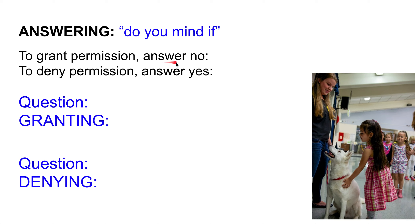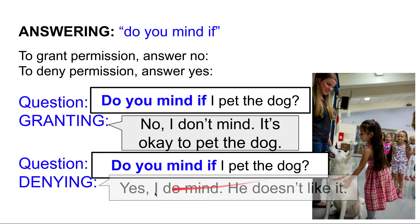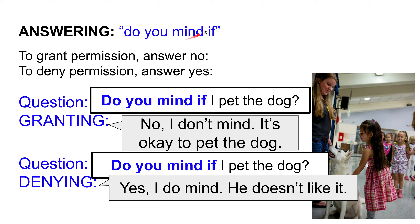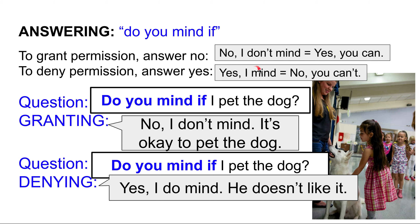To grant permission with 'do you mind if,' answer 'No': 'Do you mind if I pet the dog?' — 'No, I don't mind. It's okay to pet the dog.' To deny permission, answer 'Yes': 'Do you mind if I pet the dog?' — 'Yes, I do mind.' Think of 'mind' as similar to 'hate' — 'No, I don't mind' means 'No, I don't hate it,' which equals 'Yes, you can.' 'Yes, I mind' means 'Yes, I hate it,' which equals 'No, you can't.'